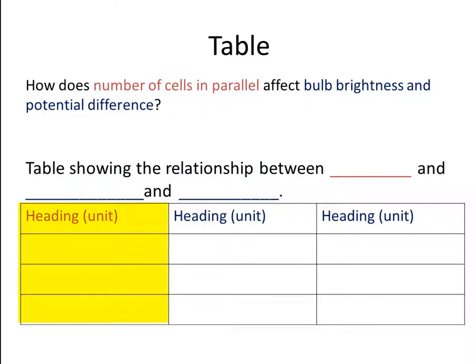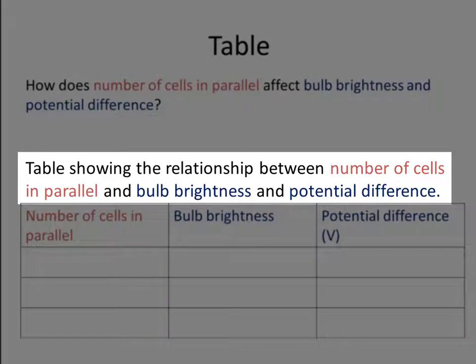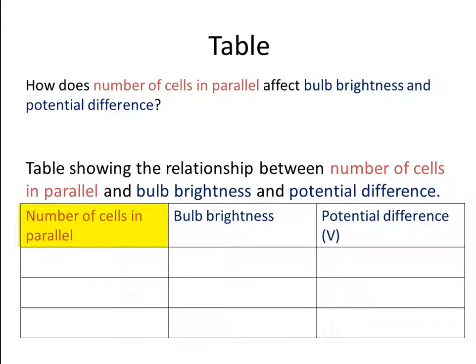The first column is for the independent variable — does it have a unit? The second columns are for the two dependent variables — does each have a unit? Complete all this before you continue. The table shows the relationship between number of cells in parallel, bulb brightness, and potential difference. Number of cells in parallel has no unit, neither does bulb brightness, but potential difference has a unit: volts. We have three treatments: one cell, two cells in parallel, and three cells in parallel.